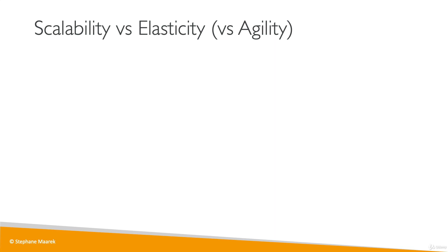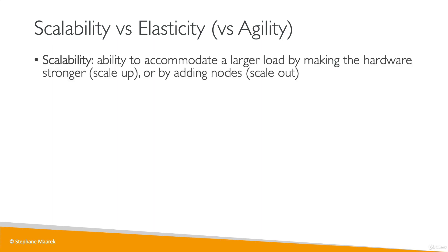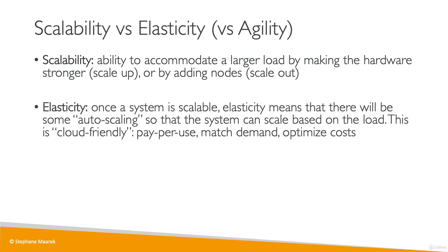The exam will ask you to figure out: is this scalability? Is it elasticity? Is it agility? So here are some formal definitions. Scalability is the ability for a system to accommodate a larger load by making the hardware stronger — scaling up — or by adding nodes — scaling out. Elasticity is something more cloud native. Once a system is scalable, elasticity means there will be some sort of auto-scaling so that the system can scale based on the load it's receiving. In this case, we pay per use, matching the demand we receive with the number of servers — optimizing cost. In AWS, elasticity is a key concept.